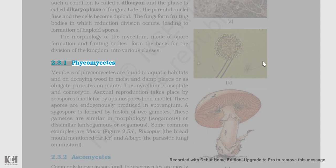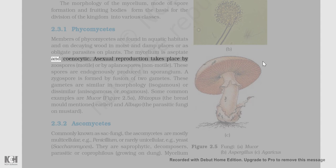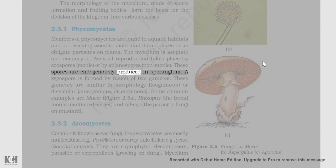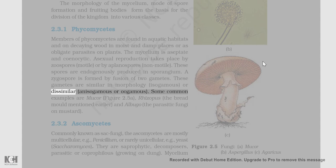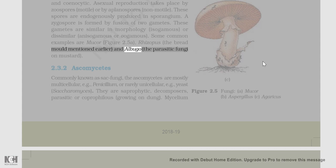I. Phycomycetes: Members of phycomycetes are found in aquatic habitats and on decaying wood in moist and damp places, or as obligate parasites on plants. The mycelium is aseptate and coenocytic. Asexual reproduction takes place by zoospores (motile) or by aplanospores (non-motile). These spores are endogenously produced in a sporangium. A zygospore is formed by fusion of two gametes, which are similar in morphology (isogamous) or dissimilar (anisogamous or oogamous). Some common examples are Mucor (Figure 2.5a), Rhizopus (the bread mold), and Albugo (the parasitic fungi on mustard).